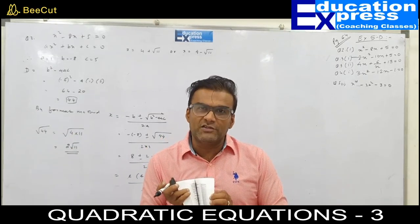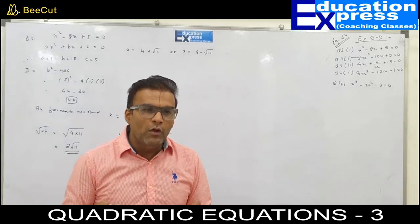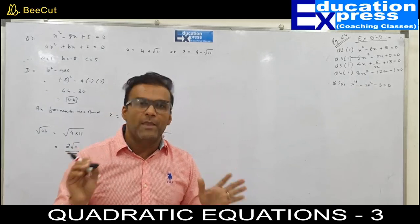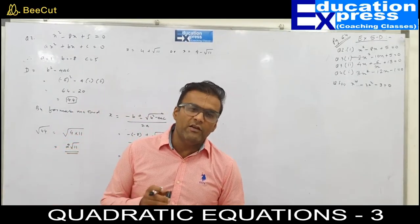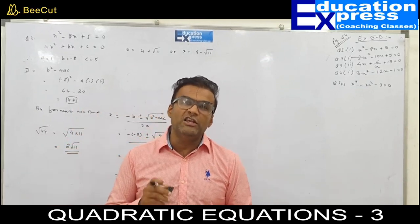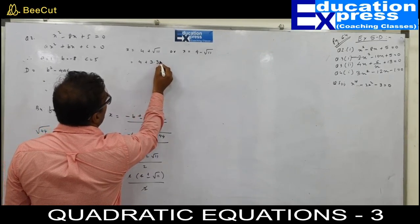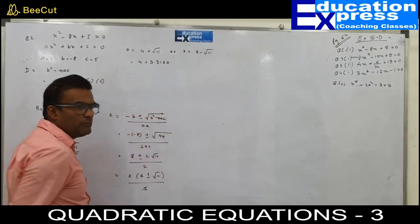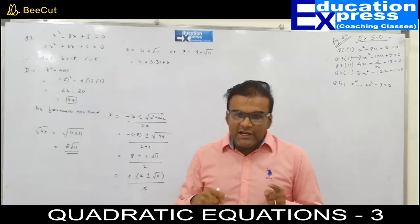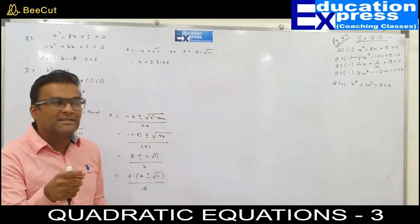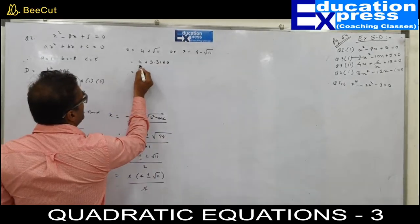In the last few pages of your textbook, you will find a square root table. That table will help you find the square root of any number. The value of square root of 11 is 3.3166. This value is obtained from the square root table. I will now substitute the value of root 11.